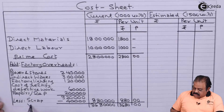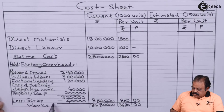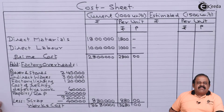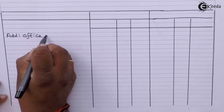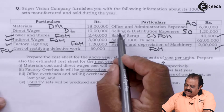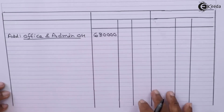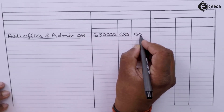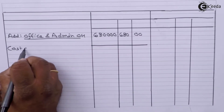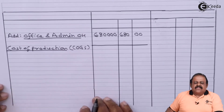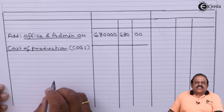So works cost will be 36,80,000 and per unit works cost is 3680. To this we are required to add office and administration overheads. Office and administration expenses are given 6,80,000. We will add this to works cost to arrive at cost of production.